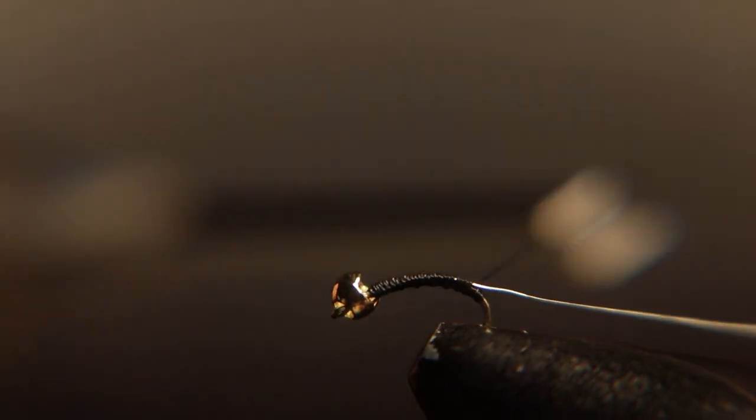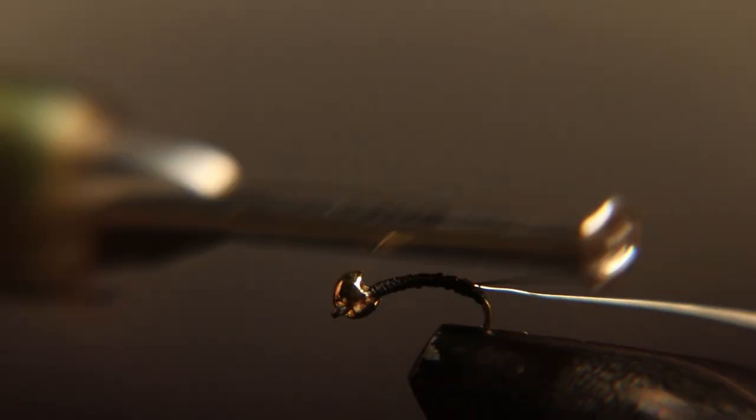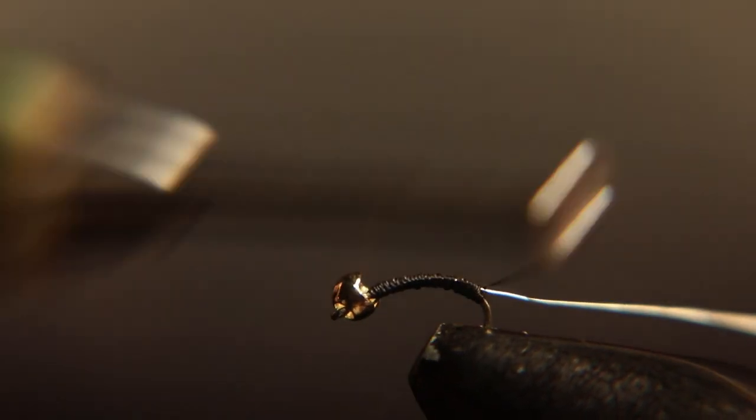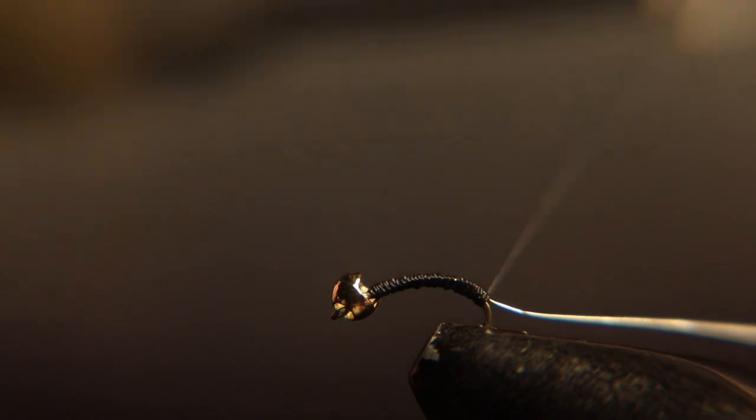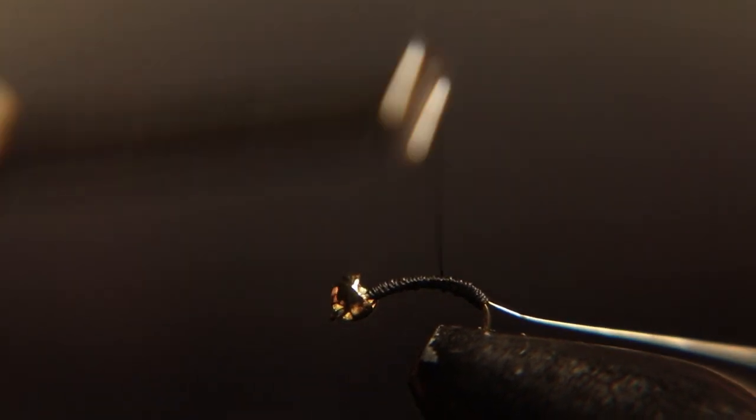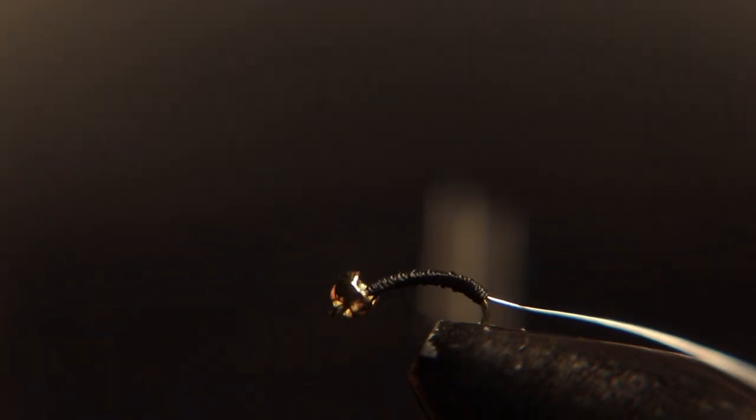And we've got a gold bead instead of silver, and this will set your fly apart from all the other ones on the stream. And then we're going to build up a body after we tie this wire.